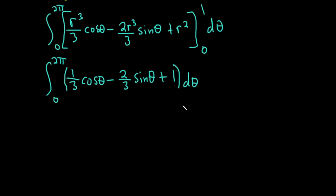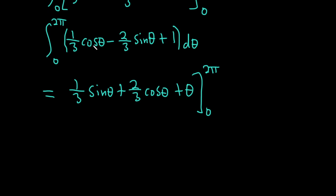Let's keep going. This is equal to, so here we have to integrate cosine. So what's a function whose derivative is cosine? Sine. This will be 1 third sine theta. And then what's a function whose derivative is negative sine? Well, cosine. So plus 2 thirds cosine theta. Plus integrate 1, you get theta. Going from 0 to 2 pi. So again, what's a function whose derivative is cosine? Sine, right? So the integral of cosine is sine. What's a function whose derivative is negative sine? Well, the derivative of cosine is negative sine, so the integral of negative sine is cosine. And then integrating 1, we get theta.